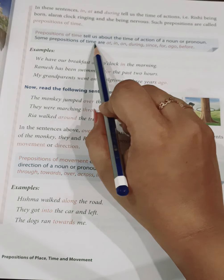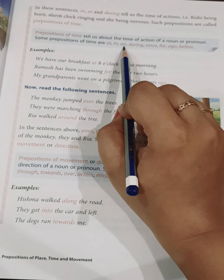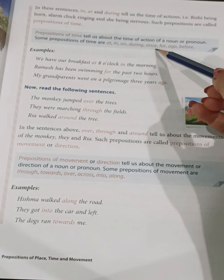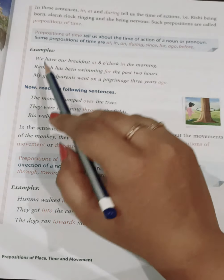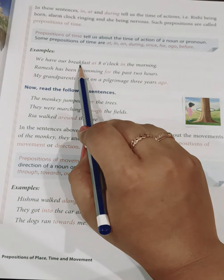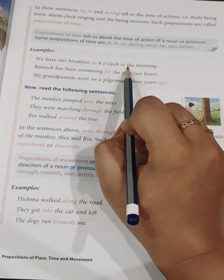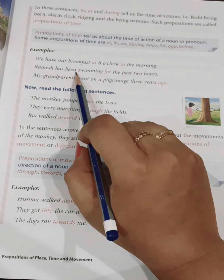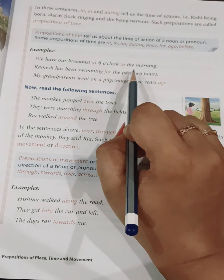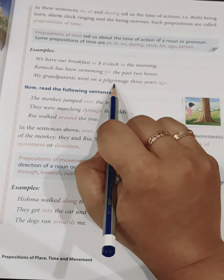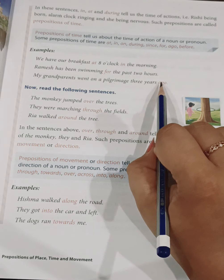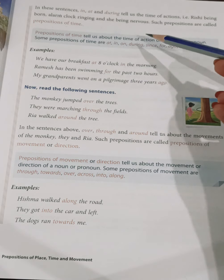Some prepositions of time are: at, in, on, during, since, for, ago and before. Examples: We have our breakfast at 8 o'clock in the morning. Ramesh has been swimming for the past two hours. My grandparents went on a pilgrimage three years ago. All these represent time.